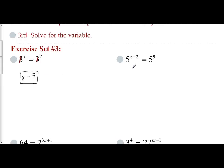If I look at this one, I have 5^(x+2) = 5^9. I have the same base. I can kind of imagine them being crossed out. So really I'm left with x + 2 = 9. You would subtract two from both sides to get x equals seven.